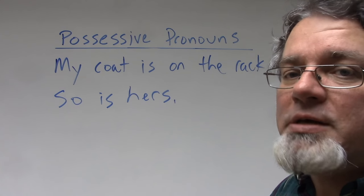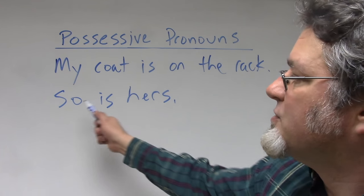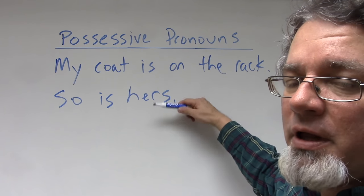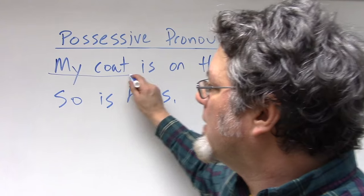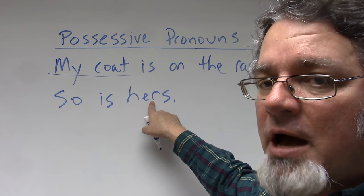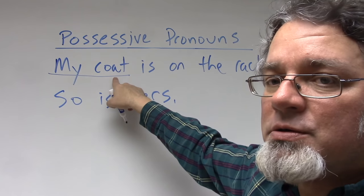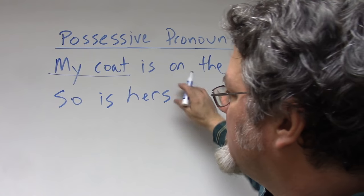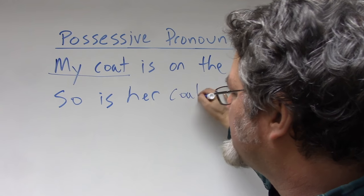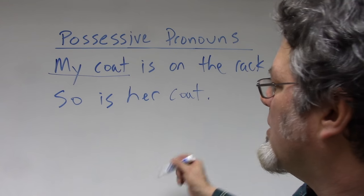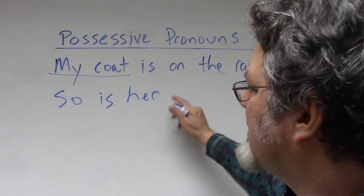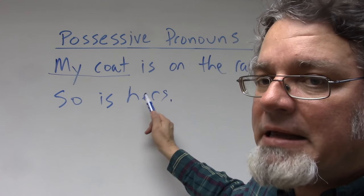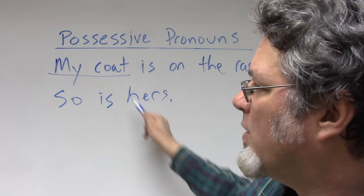'My coat is on the rack. So is hers.' Looking at two different people and two different coats — when I use this possessive pronoun, I'm thinking about 'coat.' I could say 'So is her coat' instead of 'So is hers,' but it sounds better to say 'So is hers.' This is regarded as singular because I'm thinking about one coat.